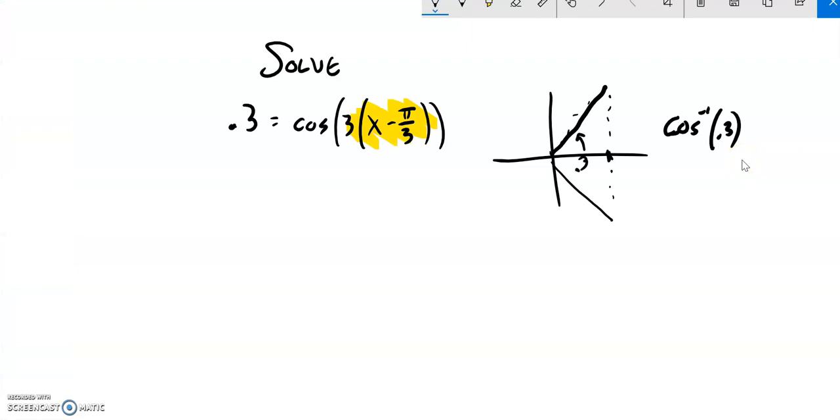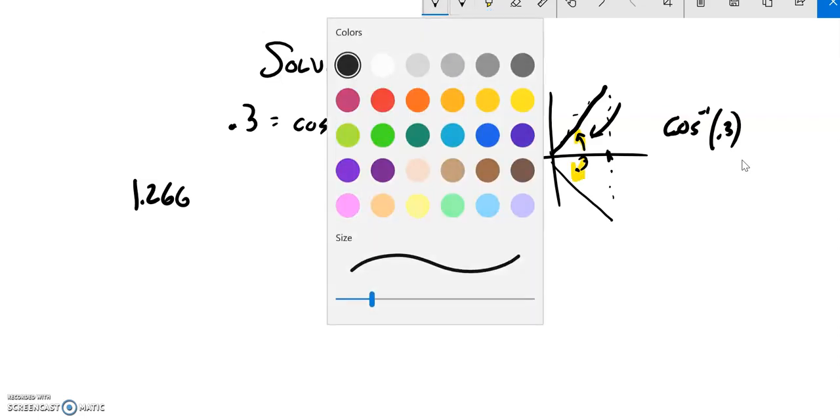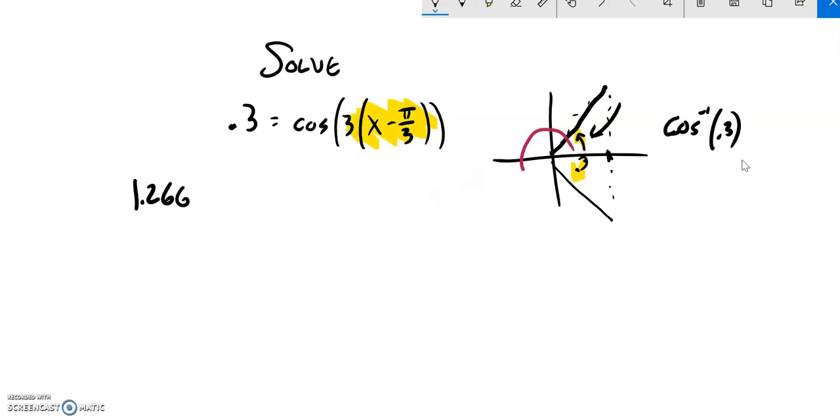So that means this angle right here is about 1.266 radians. There's that rotation right there. And now if I want to get this rotation, notice that this angle is the same as that angle. So I want to find this.